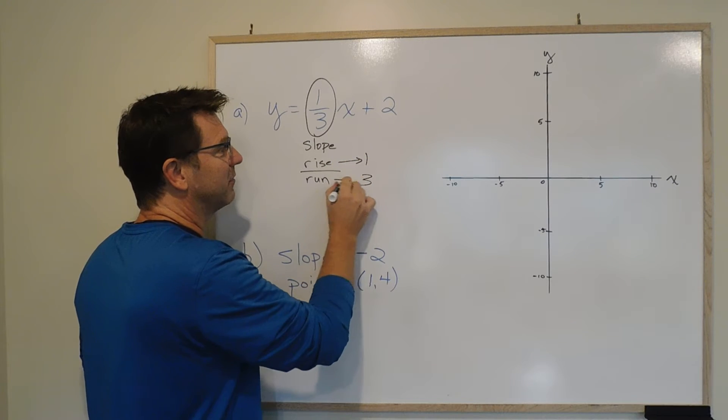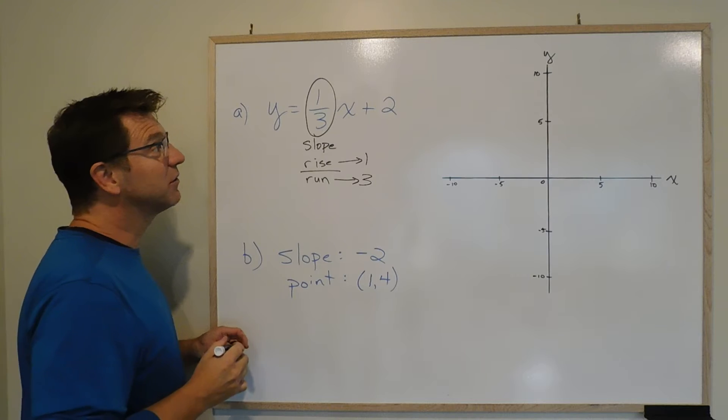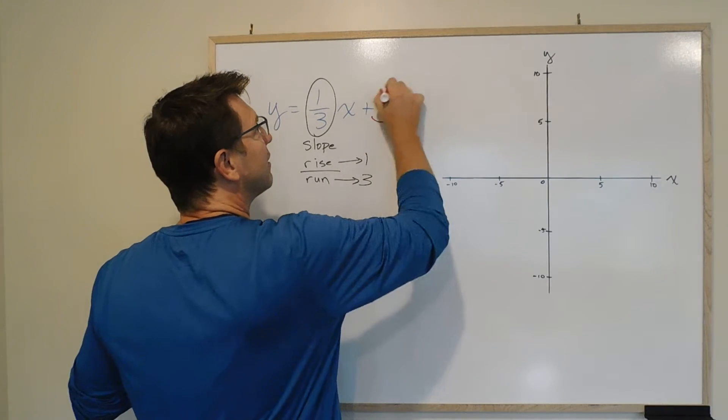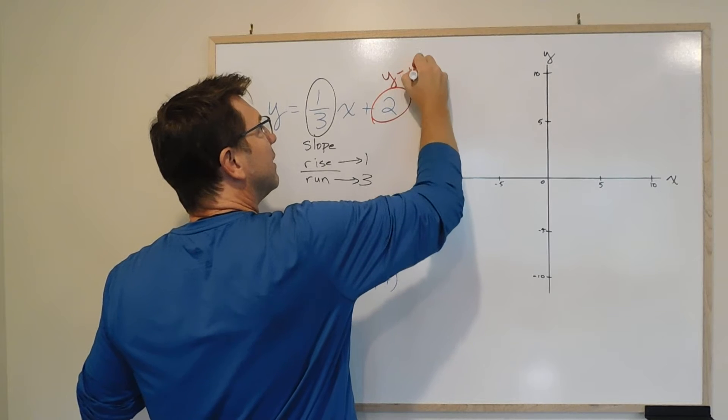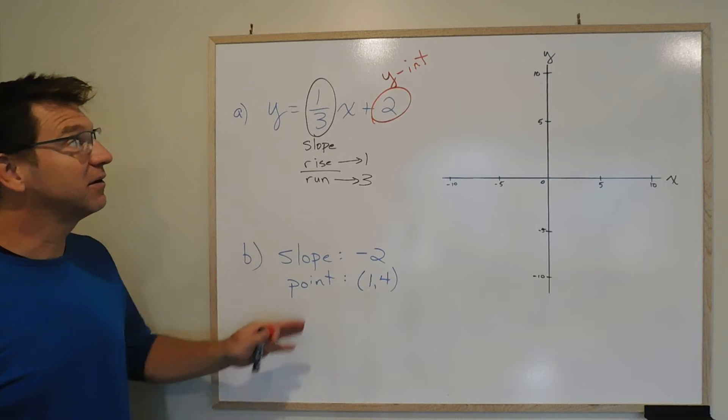The rise is 1 and the run is 3. Maybe no equal sign, maybe we'll just point. Rise is 1, run is 3. We also know, let's change color here, we also know that this here is the y-intercept. It's where it crosses the y-axis.